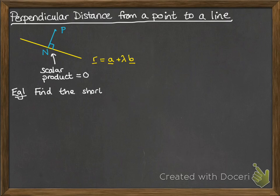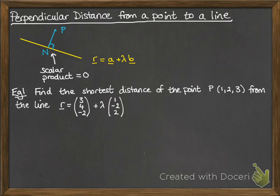Okay, so this is easiest to do with an example. We're going to find the shortest distance of the point P (1, 2, 3) from the line with that following equation. So P is 1, 2, 3.